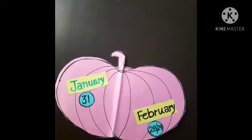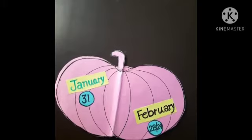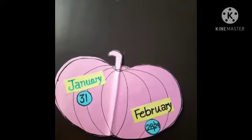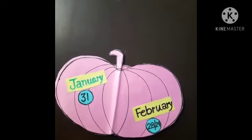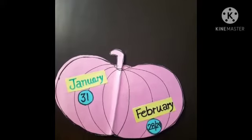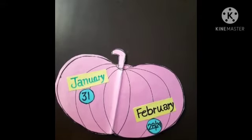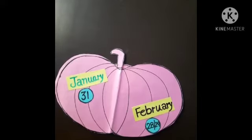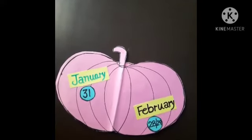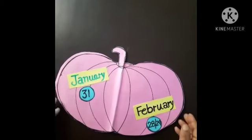The first month of the year is January, and it has 31 days. The second month is February. February has 28 or 29 days. February is the shortest month of the year. When February has 29 days, such a year is called a leap year.